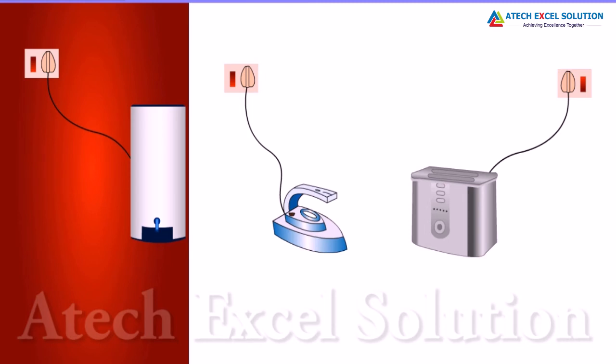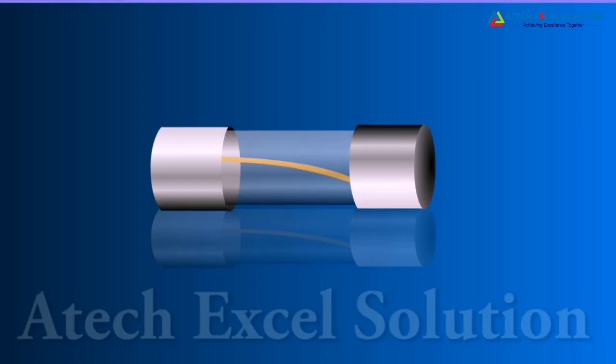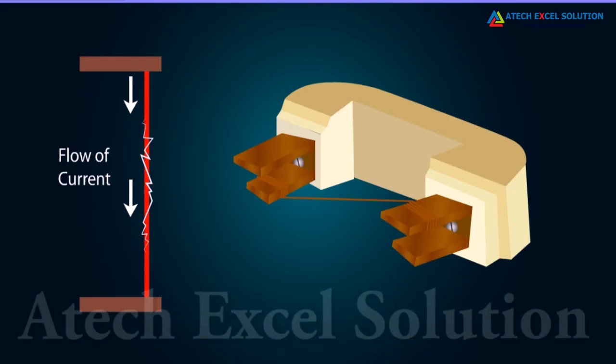Electric fuse is an important component of all domestic circuits. It protects the circuits due to short-circuiting or overloading of the circuits. During short-circuiting, the current in the circuit abruptly increases which causes the thin wire of the fuse to melt before it can damage the appliance. Overloading can occur due to an accidental hike in the supply voltage or by connecting too many appliances to a single socket.